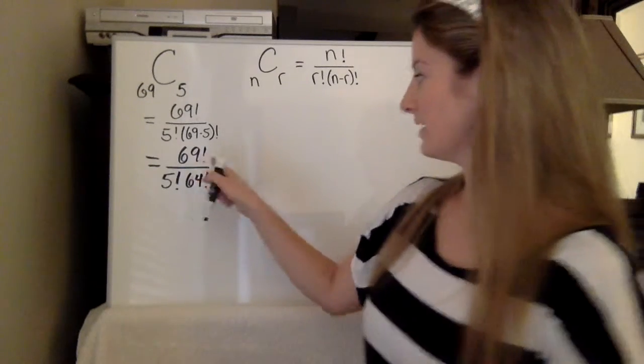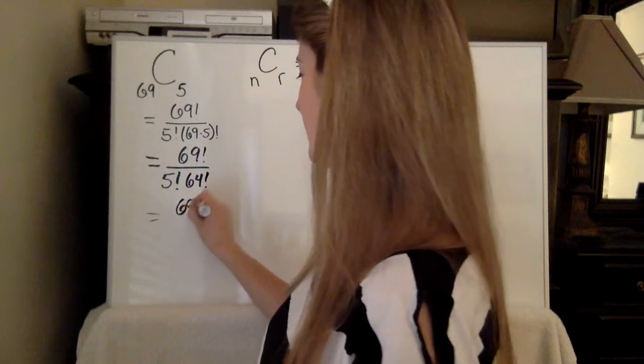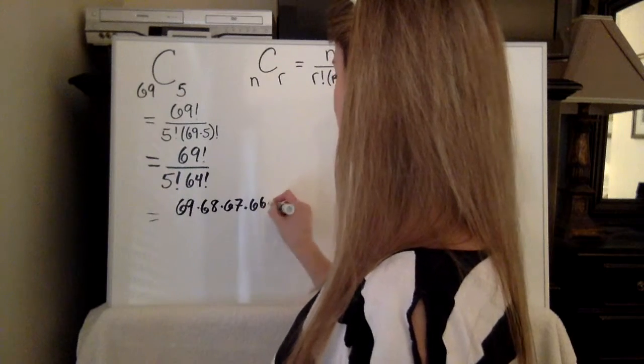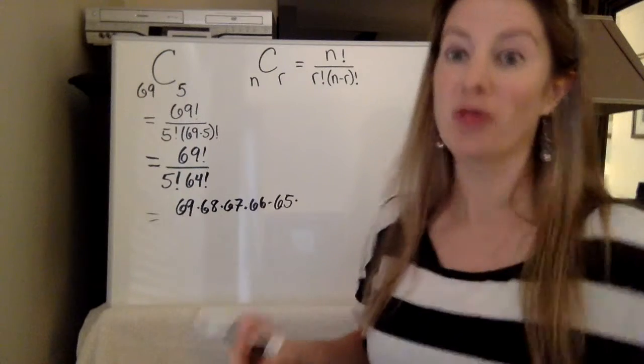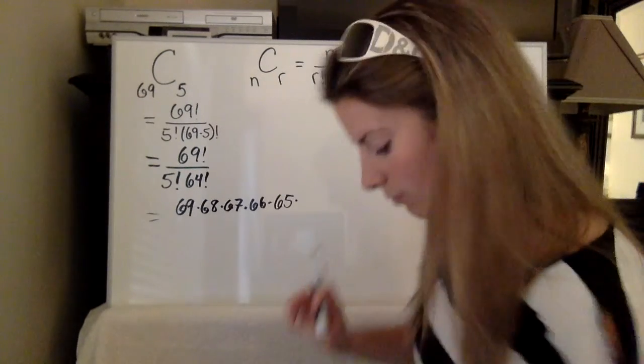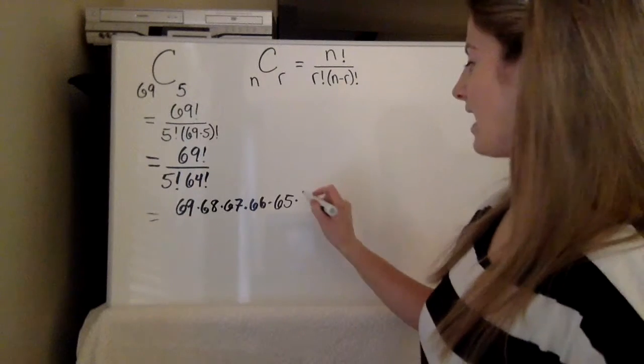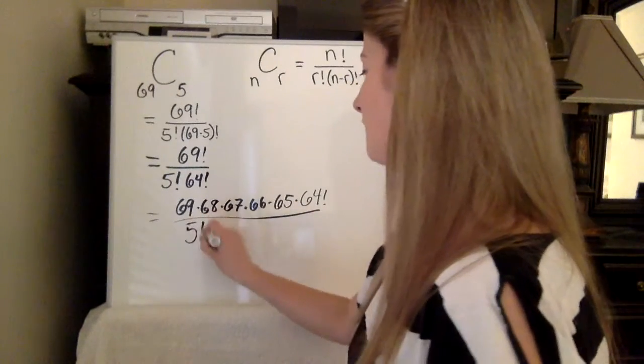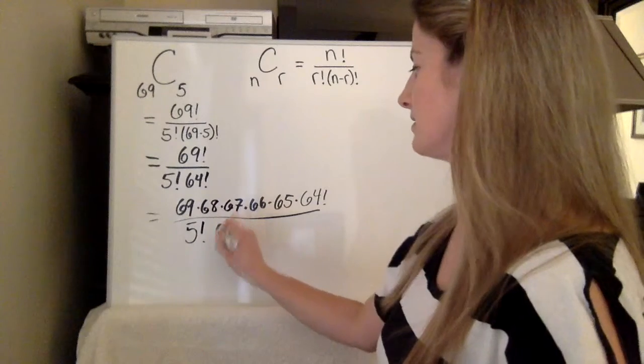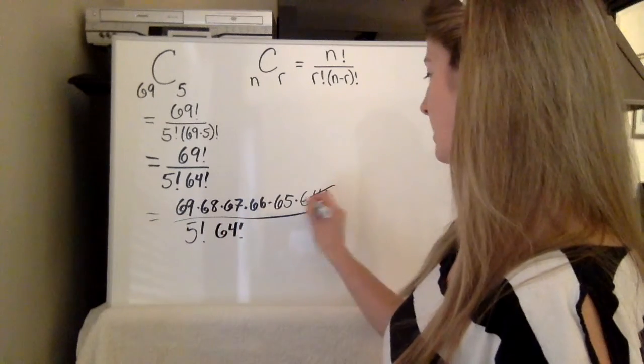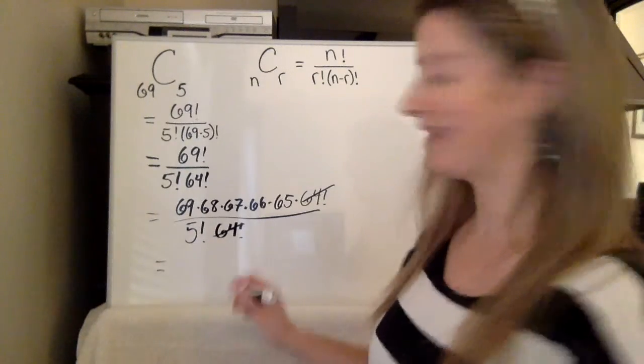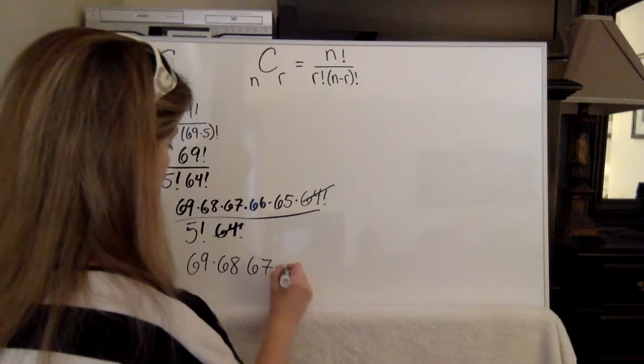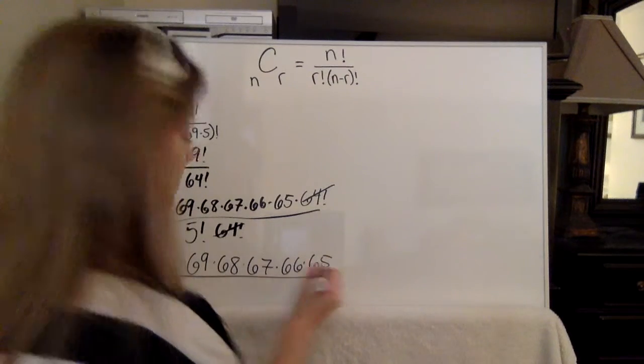So if we simplify that, it will be over 64 factorial. So now what we know is 69 factorial we can rewrite as 69 times 68 times 67 times 66 times 65 times, and then instead of going all the way down we can write it as 64 factorial. So then divided by 5 factorial times 64 factorial. So check you later 64 factorials, we are left with...